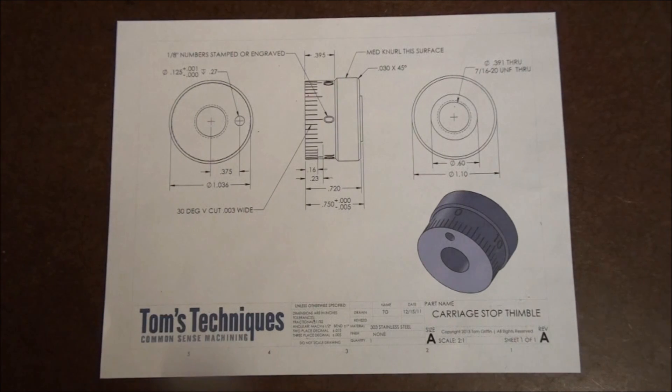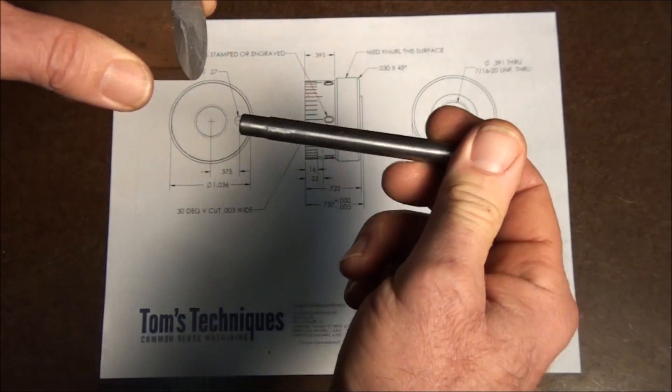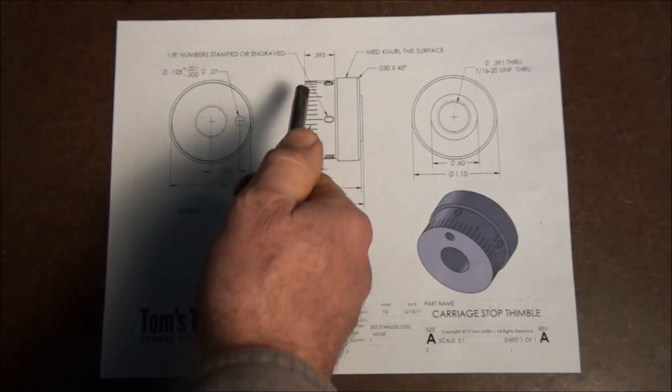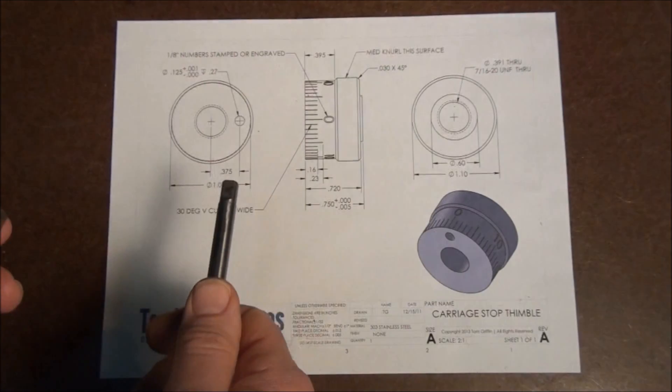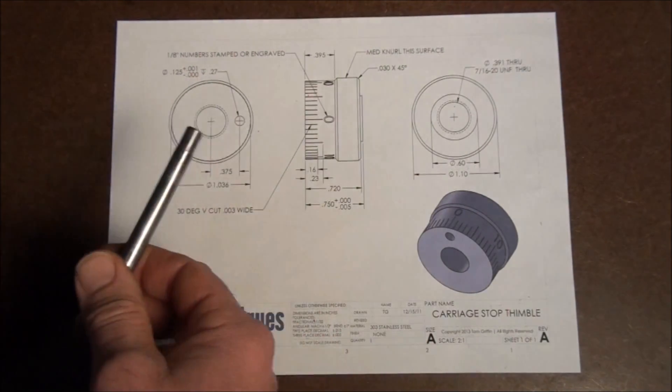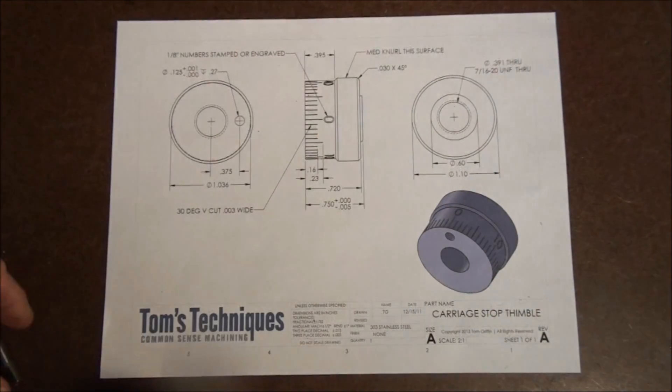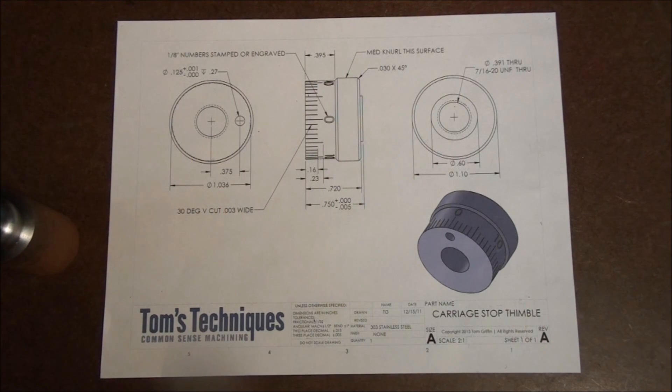And the way I'm going to do that is I'm going to bore a three eighths hole through the center of the part. And I'm going to press it onto a tapered mandrel. Then I can hold onto the mandrel to do this work on the outside here. And when we get our divisions in and our numbers stamped in, we'll take the mandrel out. We'll open the hole up to whatever the tap drill size is for seven sixteenths twenty. Then we'll tap our seven sixteenths twenty thread. So that's what I mean by order of operations. We have to do things in the right order to keep from getting in trouble on a part.